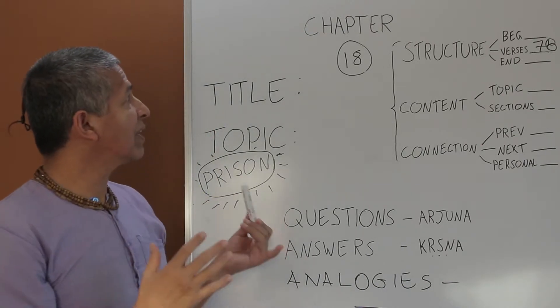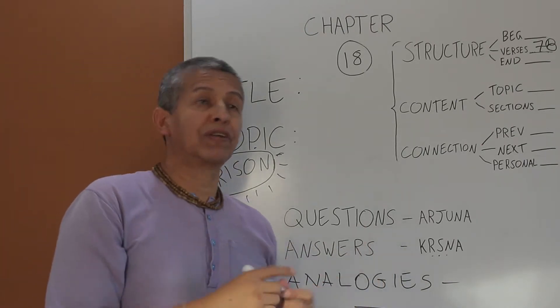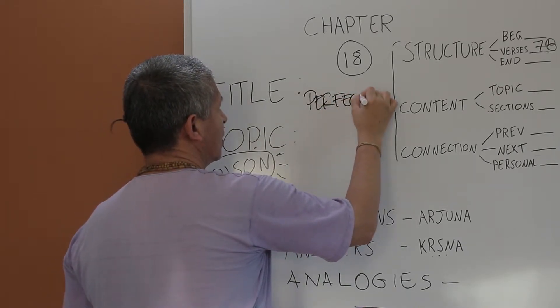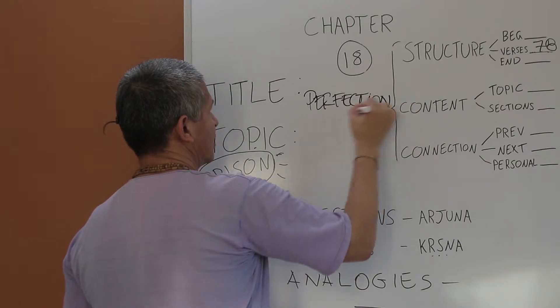So what is the title of this chapter? The Perfection of Renunciation. So let's take that word, let's try to unpack it, let's try to analyze it, what does it mean? The Perfection.